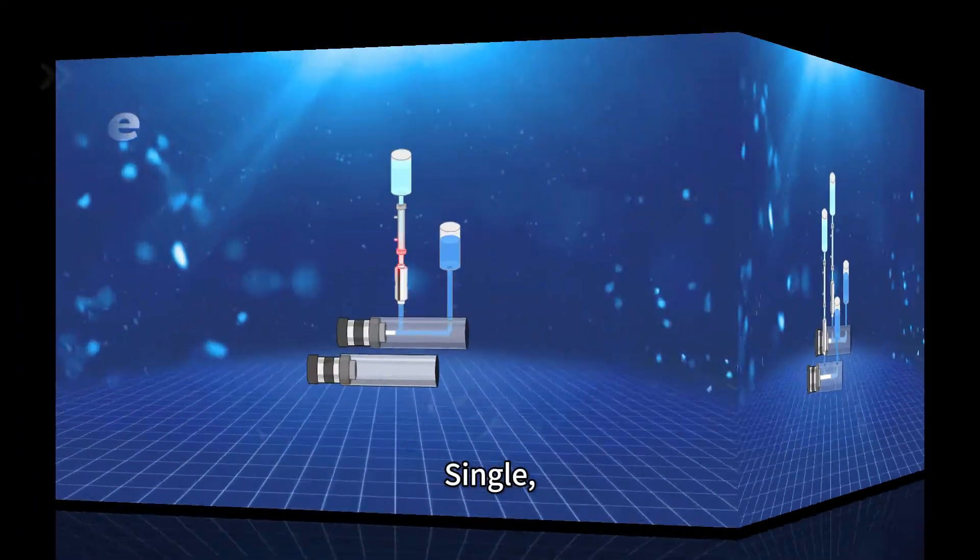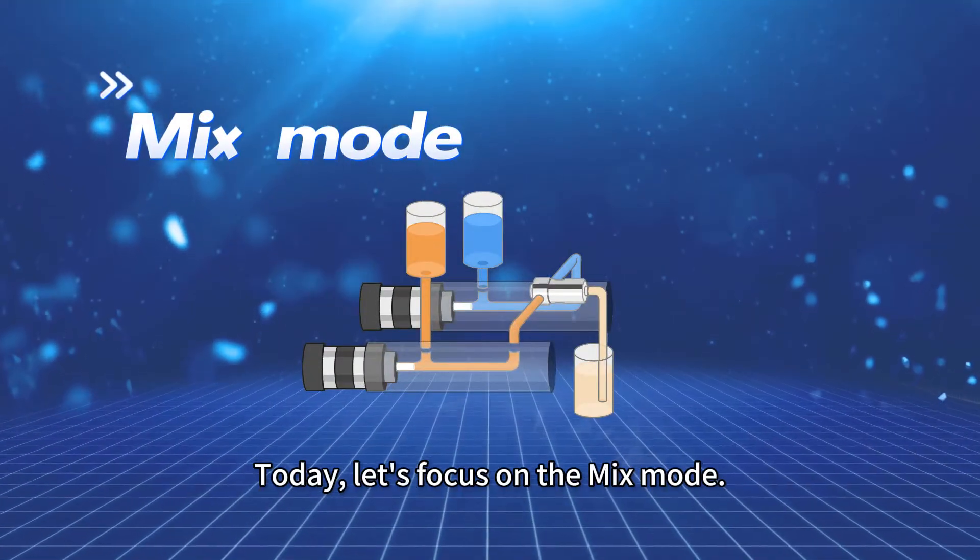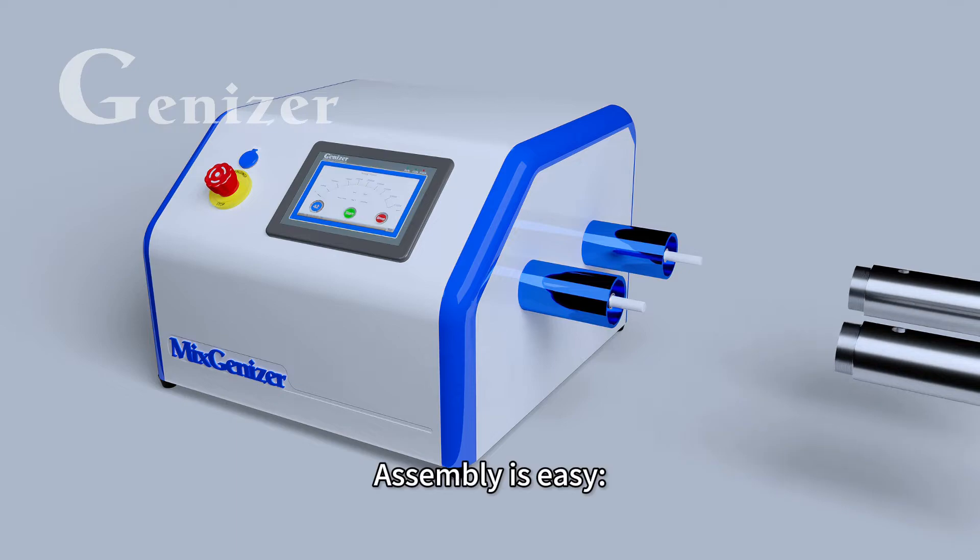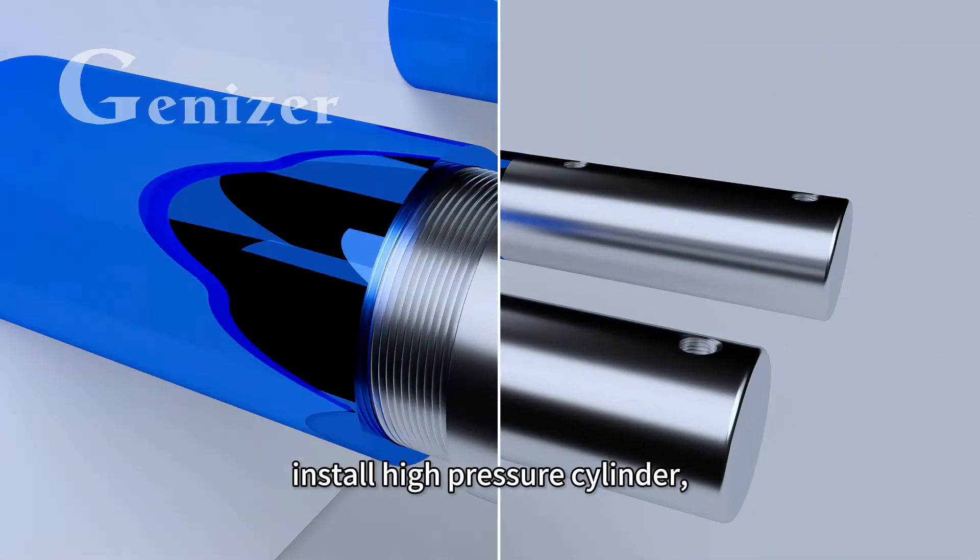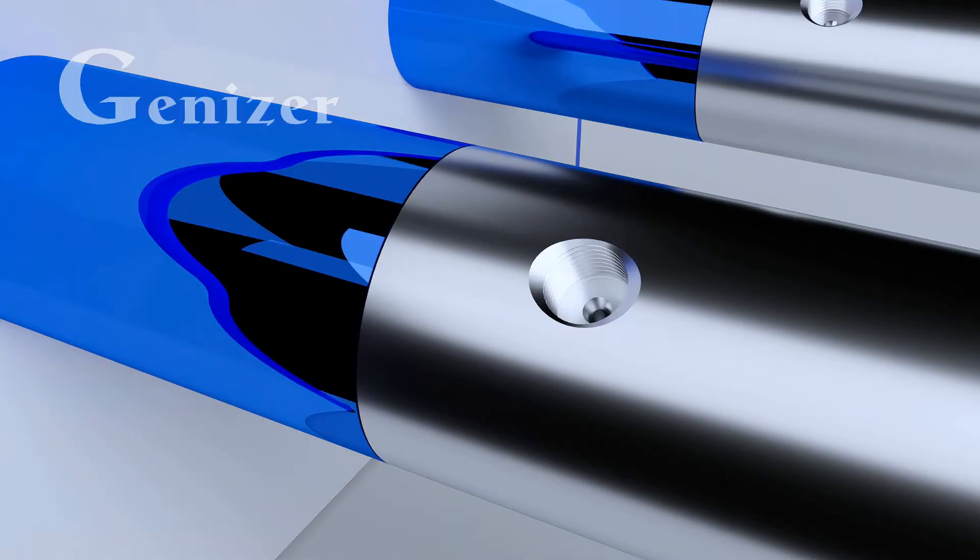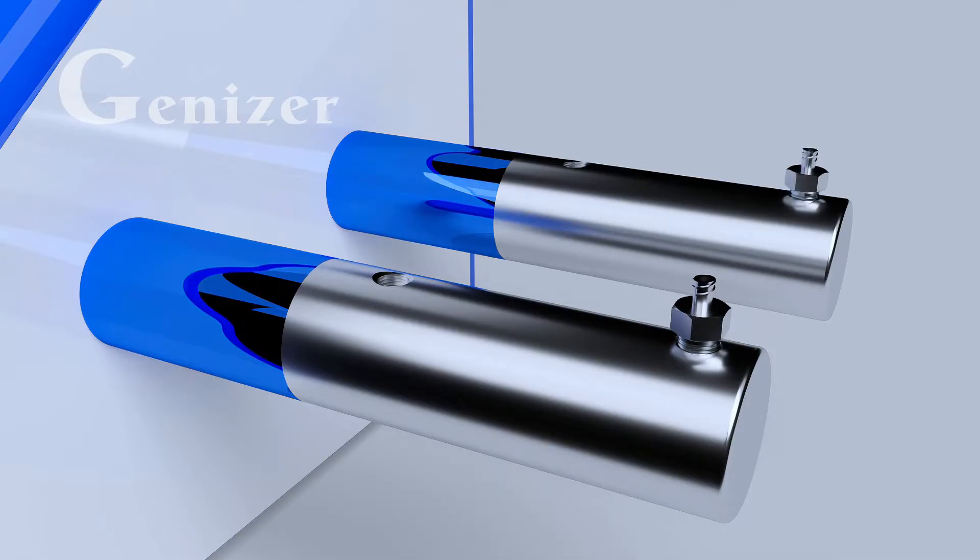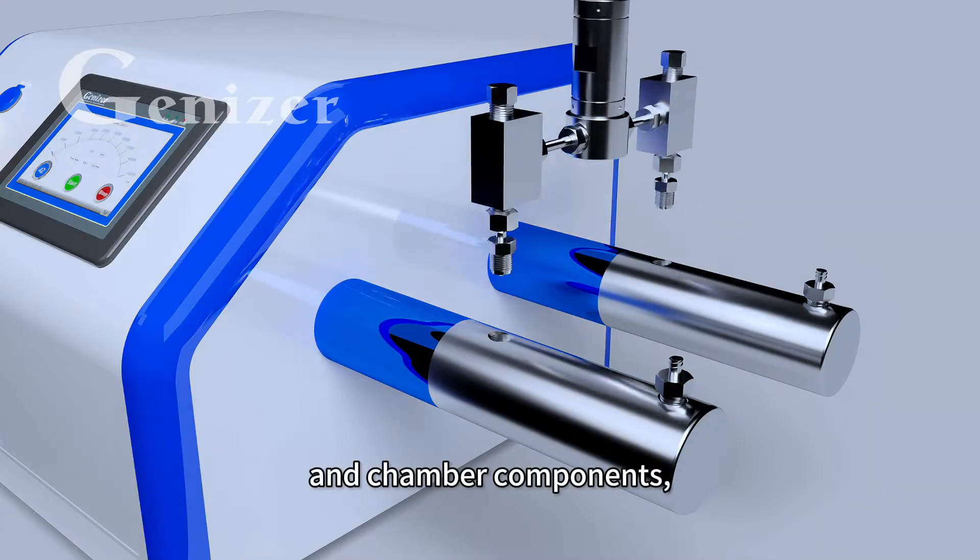Dual, single, and mix. Today, let's focus on the mix mode. Assembly is easy. Install the high-pressure cylinder, inlet check valve, and chamber components.